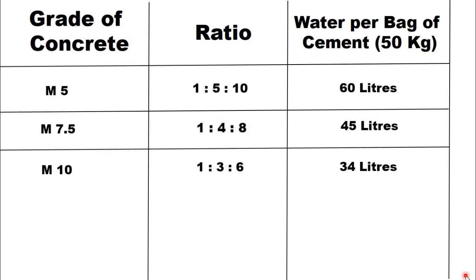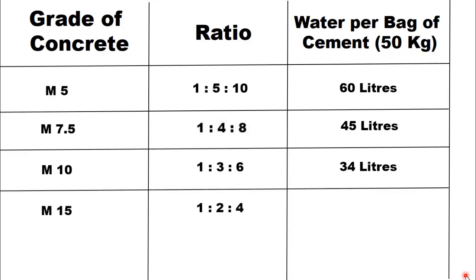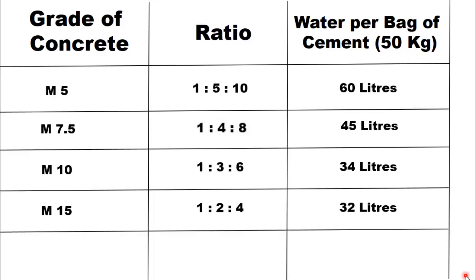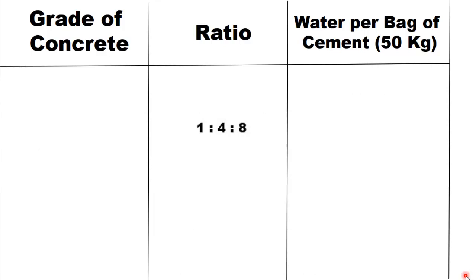For M15 grade of concrete, the water requirement is 32 liters per bag of cement, or 30 liters per 50 kilograms of cement. For M25 grade of concrete, the water requirement is 25 liters per bag of cement.